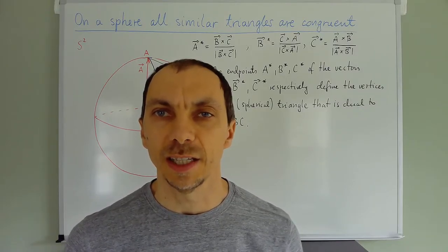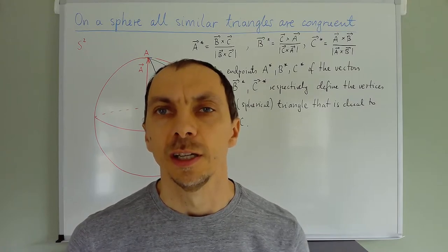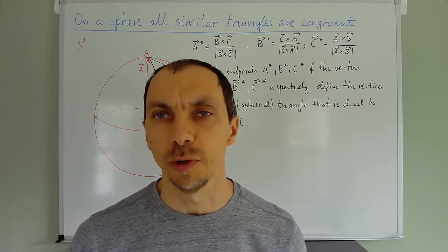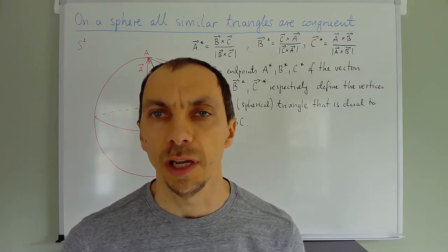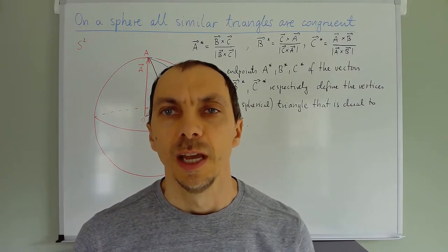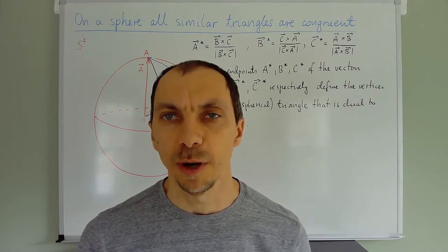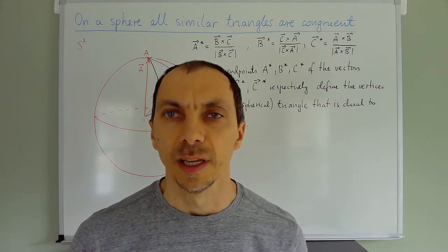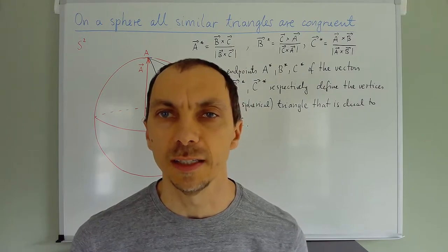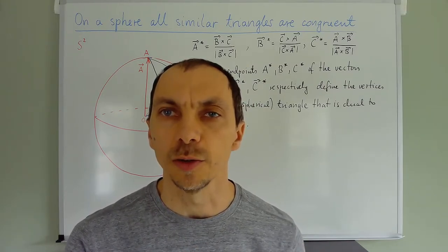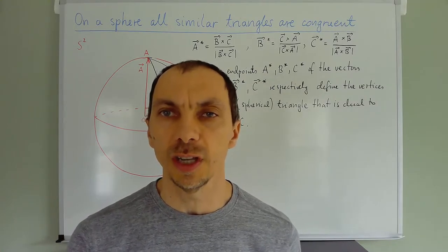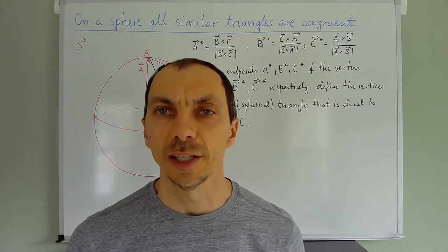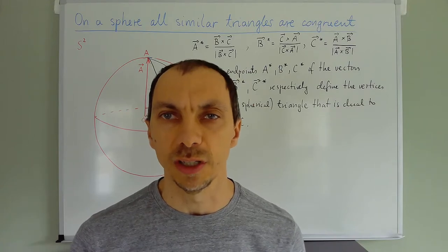We're going to prove that that's the case by using the law of cosines, and something a little more than that — namely the notion of dual triangles. We will not really have to know what dual triangles are; they're only a tool for us. So we're going to talk as little about them as possible. We want to derive a formula that gives us the length of the sides when you give all the angles — so the angles should determine the sides.